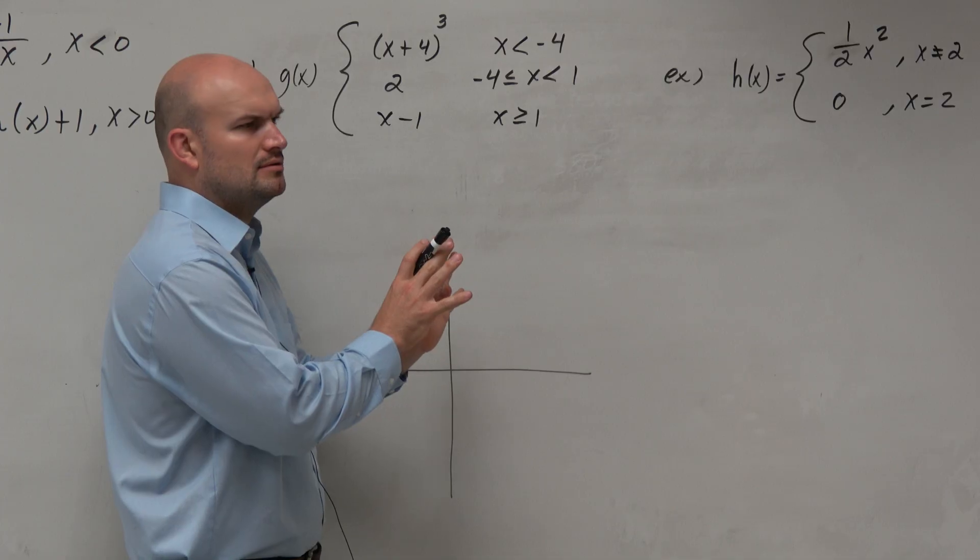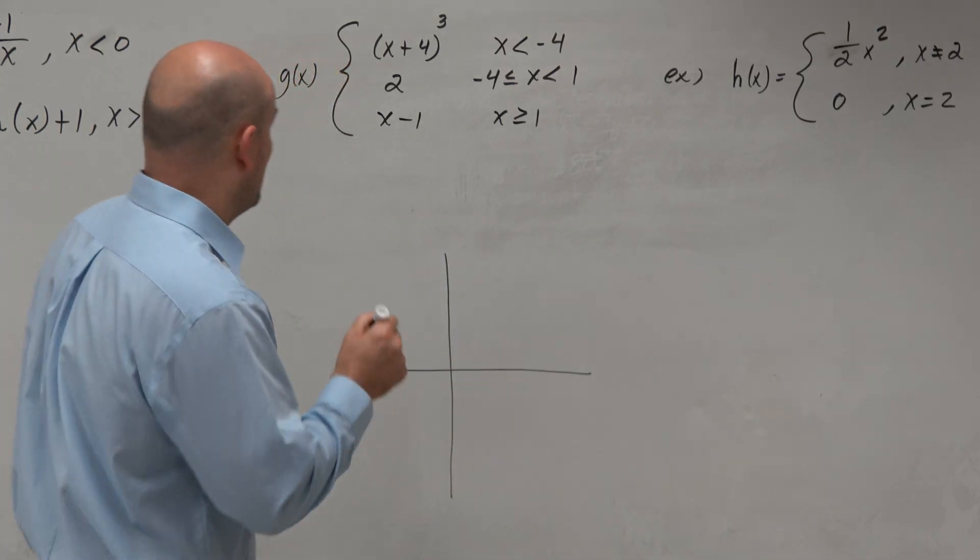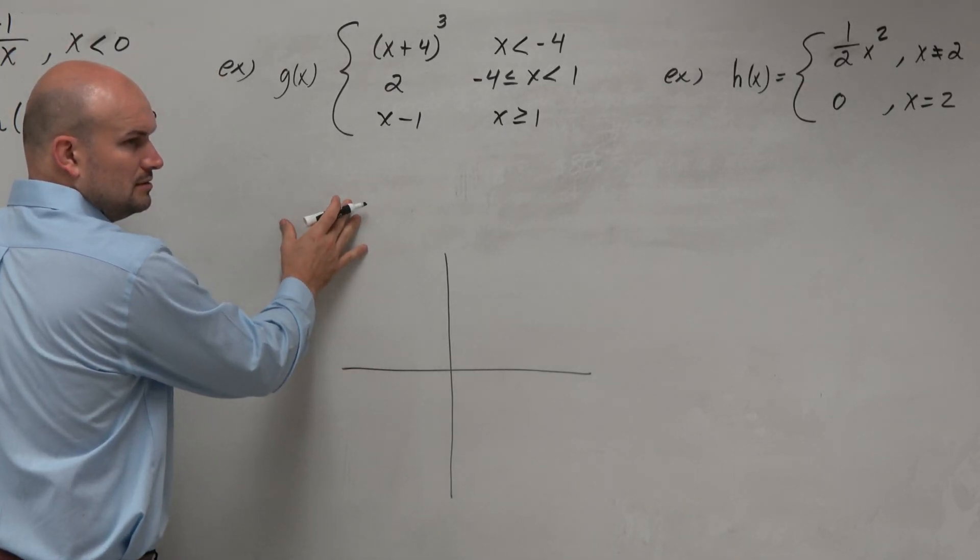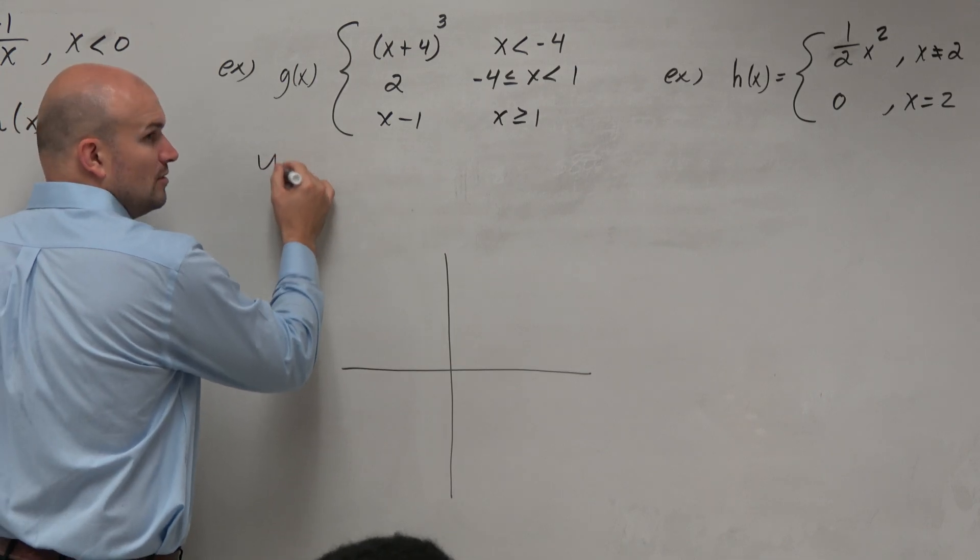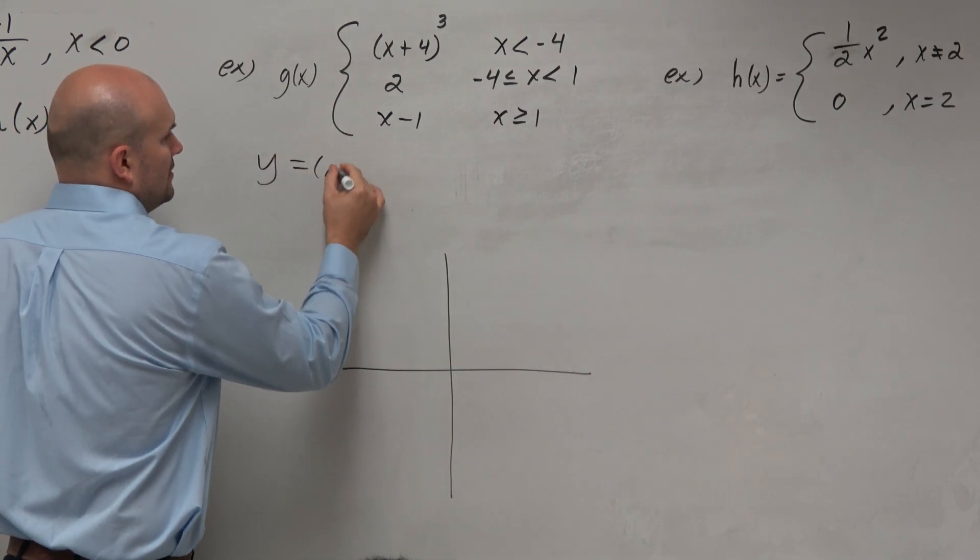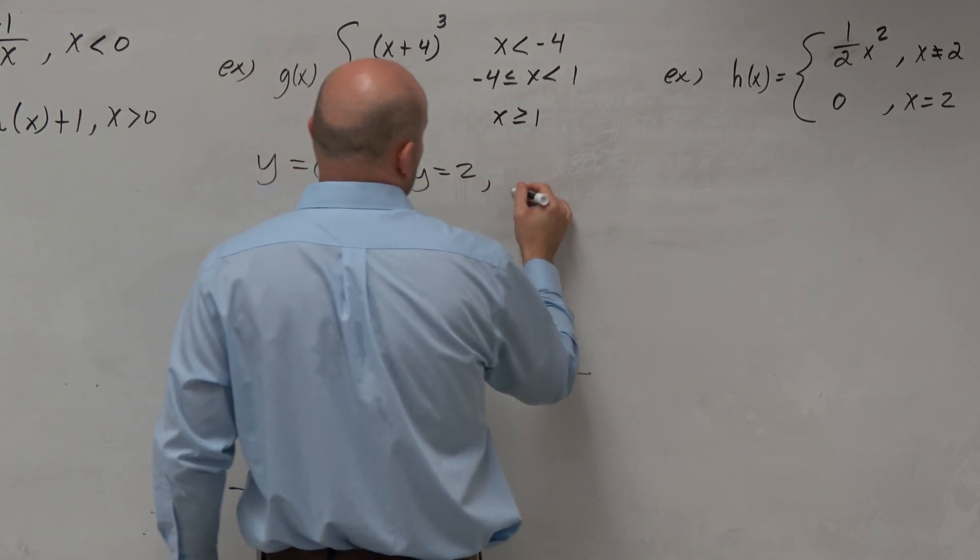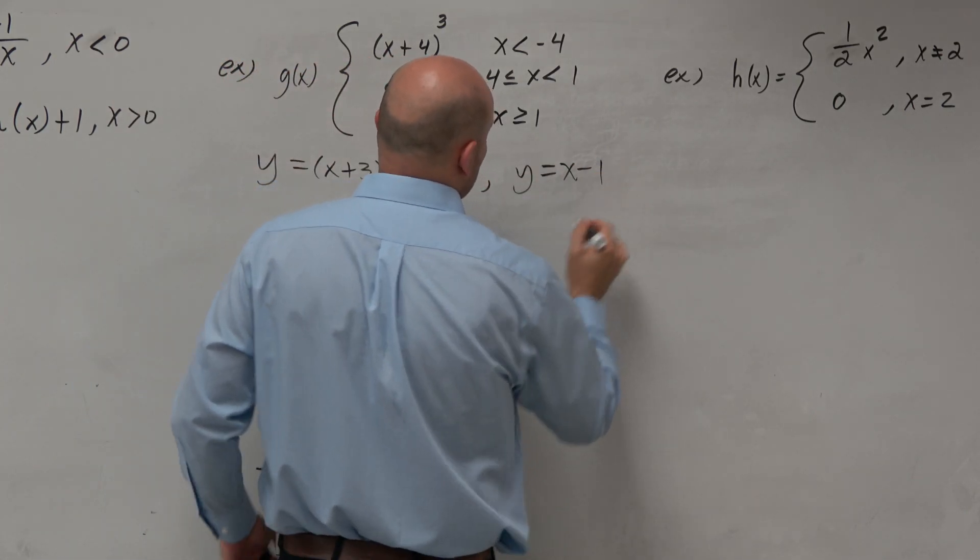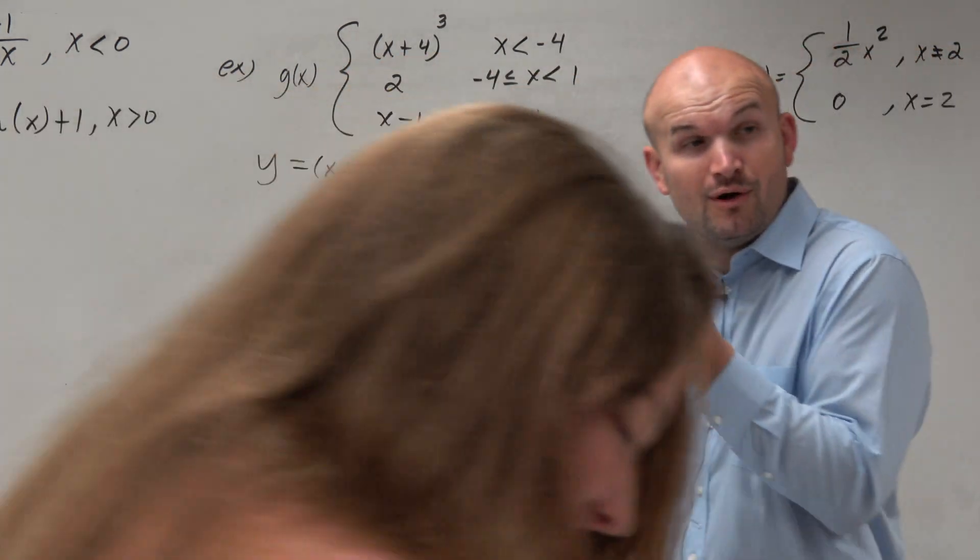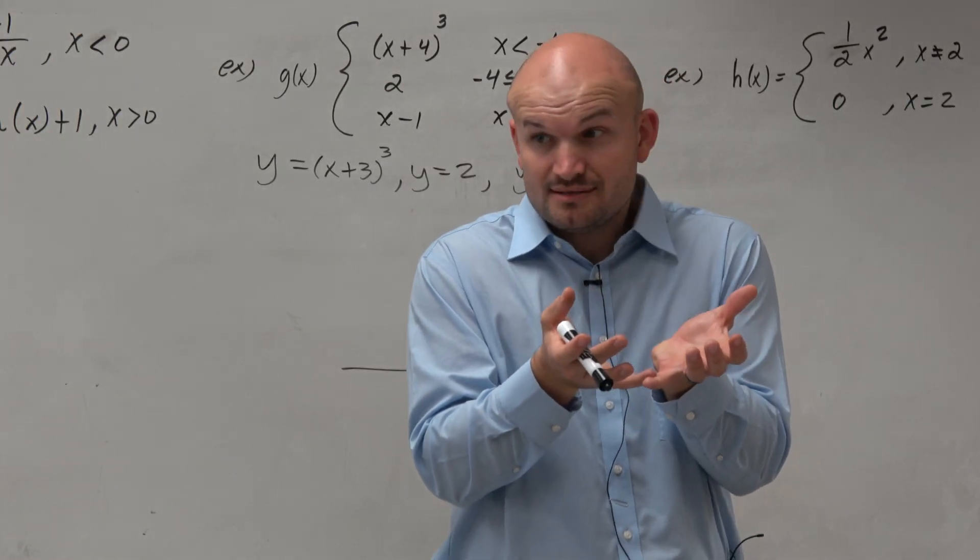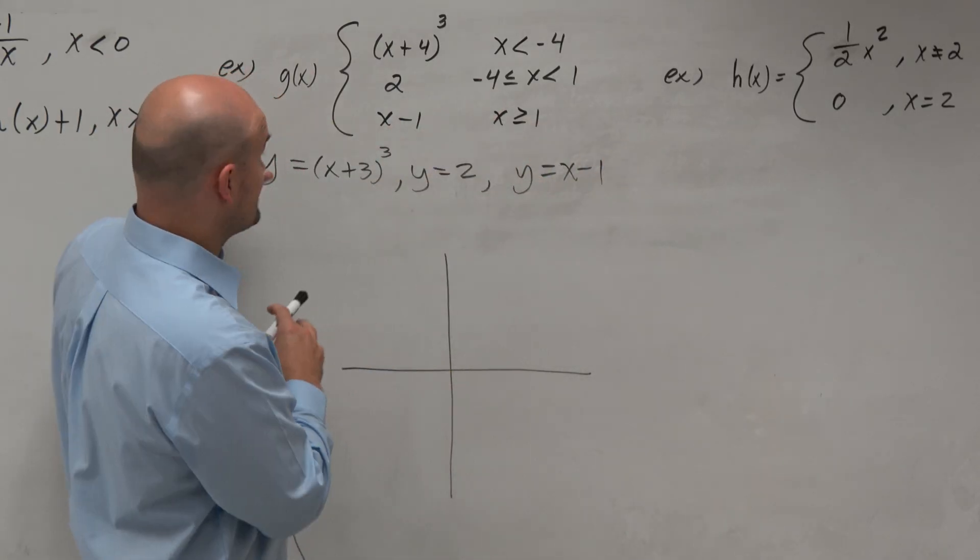So if you guys remember what we did last class, we looked at having an equation and then just graphed them. So we can look at this as y equals x plus 3 cubed, y equals 2, and y equals x minus 1. Right? So we basically have three equations that we need to graph. That's what we left last class period with. Instead of two functions like the rest of them, now we have three.